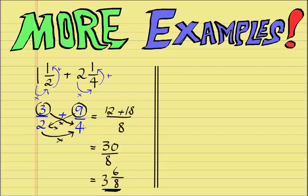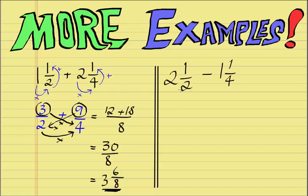Now let's take a look at subtraction with mixed numbers using the same rules. Say if we had 2 and 1/2 take away 1 and 1/4. Again, we need to convert these into improper fractions. 2 times 2 is 4 plus 1 is 5, so 5/2. Then 1 times 4 is 4 plus 1 is 5, so 5/4.